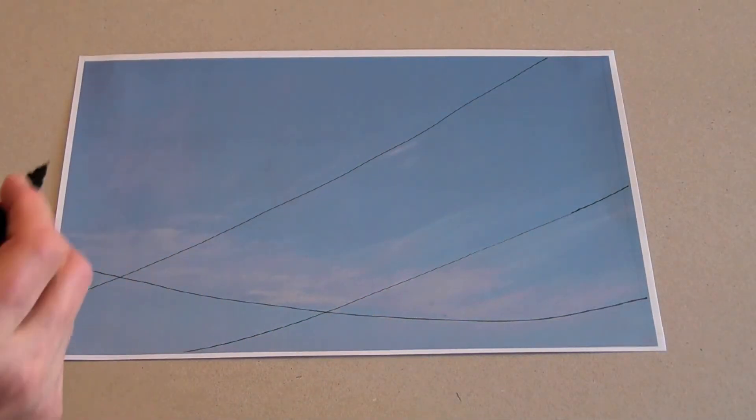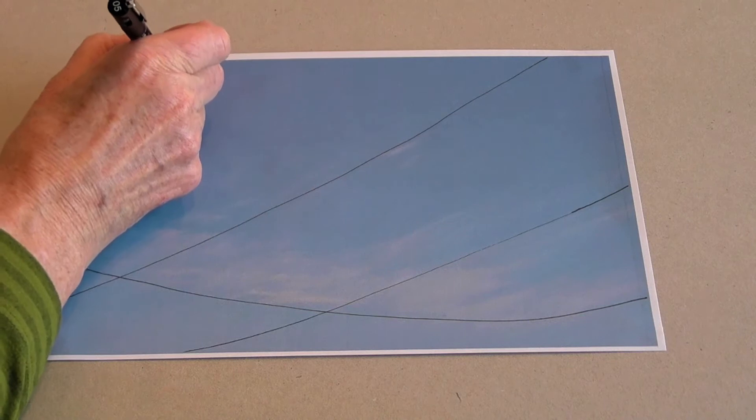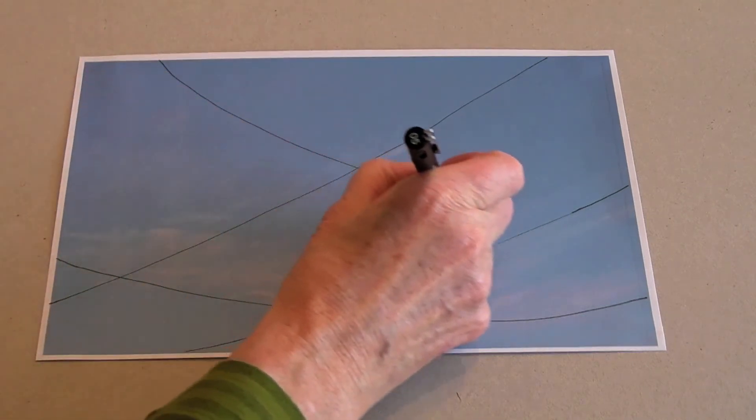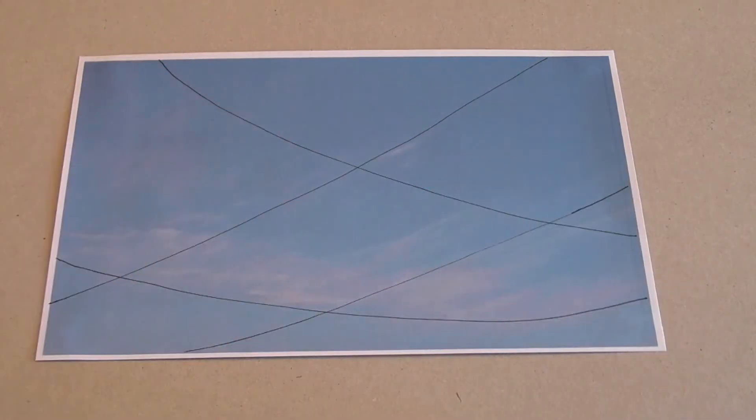So to make this grid continue on I'm just choosing to put that line there and you can see quite clearly what kind of a grid that makes to represent that sky.